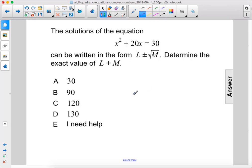The solutions of the equation x squared plus 20x equals 30 can be written in the form L plus or minus the square root of M. Determine the exact value of L plus M.